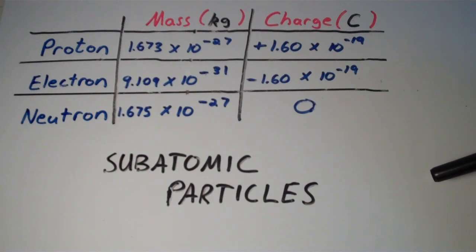And the mass of the electron, however, is much, much, orders of magnitude smaller. So the mass of the electron is 9.109 times 10 to the negative 31 kilograms. That is really, really, almost negligibly small.